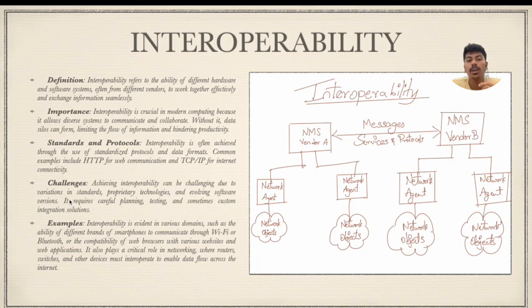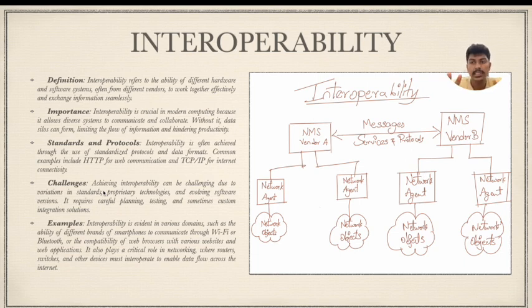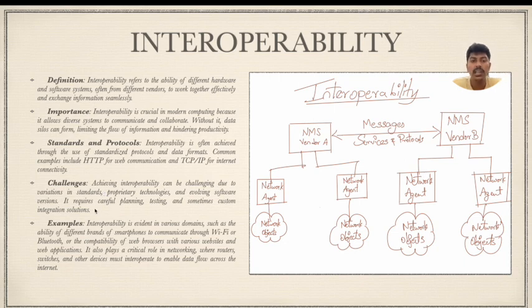The challenges of achieving interoperability include variations in standards, proprietary technologies, and evolving software versions. When achieving seamless flow of information between System 1 and System 2, there are slight hiccups — some systems may have higher standards, different software, or different versions. To overcome this, it requires careful planning, testing, and sometimes custom integration solutions to ensure no problem in the flow of information.